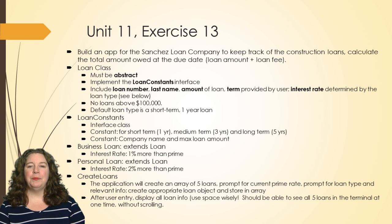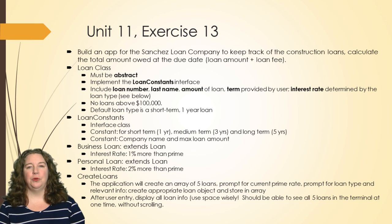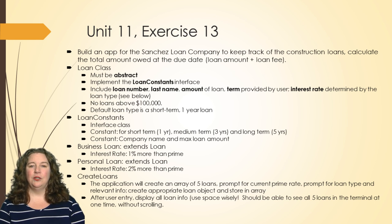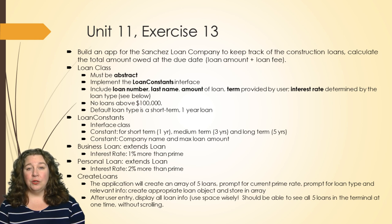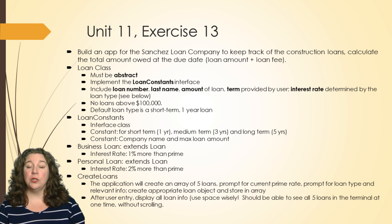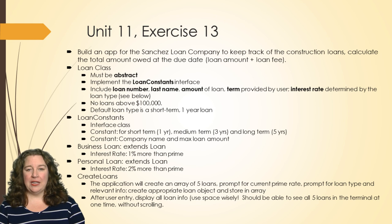Include the loan number, last name, loan amount, and loan term — all provided by the user. The interest rate is going to be determined by your subclass, whether it's a business loan or a personal loan. None of your loans can be over a hundred thousand dollars, so you'll need a constant for that. The default loan for your constructor is a short term loan of one year. The loan constants class — that's going to be your interface, and don't forget the interface gets implemented with the implements keyword.